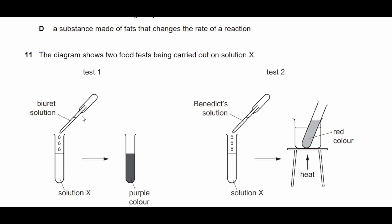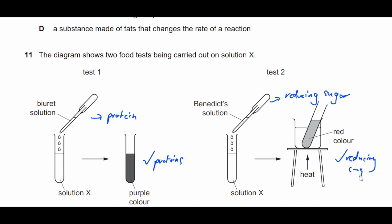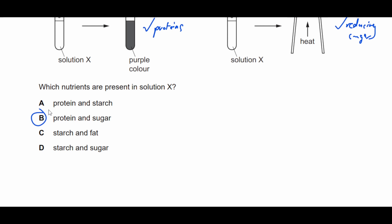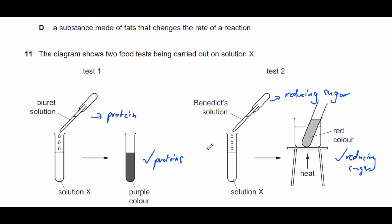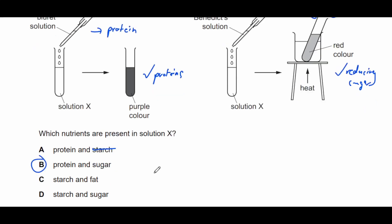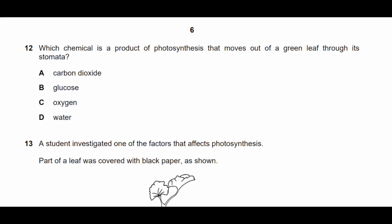Question eleven: the diagram shows two food tests carried out on solution X — biuret solution and Benedict's solution. Biuret tests for protein; Benedict's tests for reducing sugar. When it turns purple it's positive for protein; a red colour is positive for reducing sugar. Both protein and reducing sugar are present in solution X. Note that starch is not an answer for Benedict's because starch itself is not a reducing sugar.